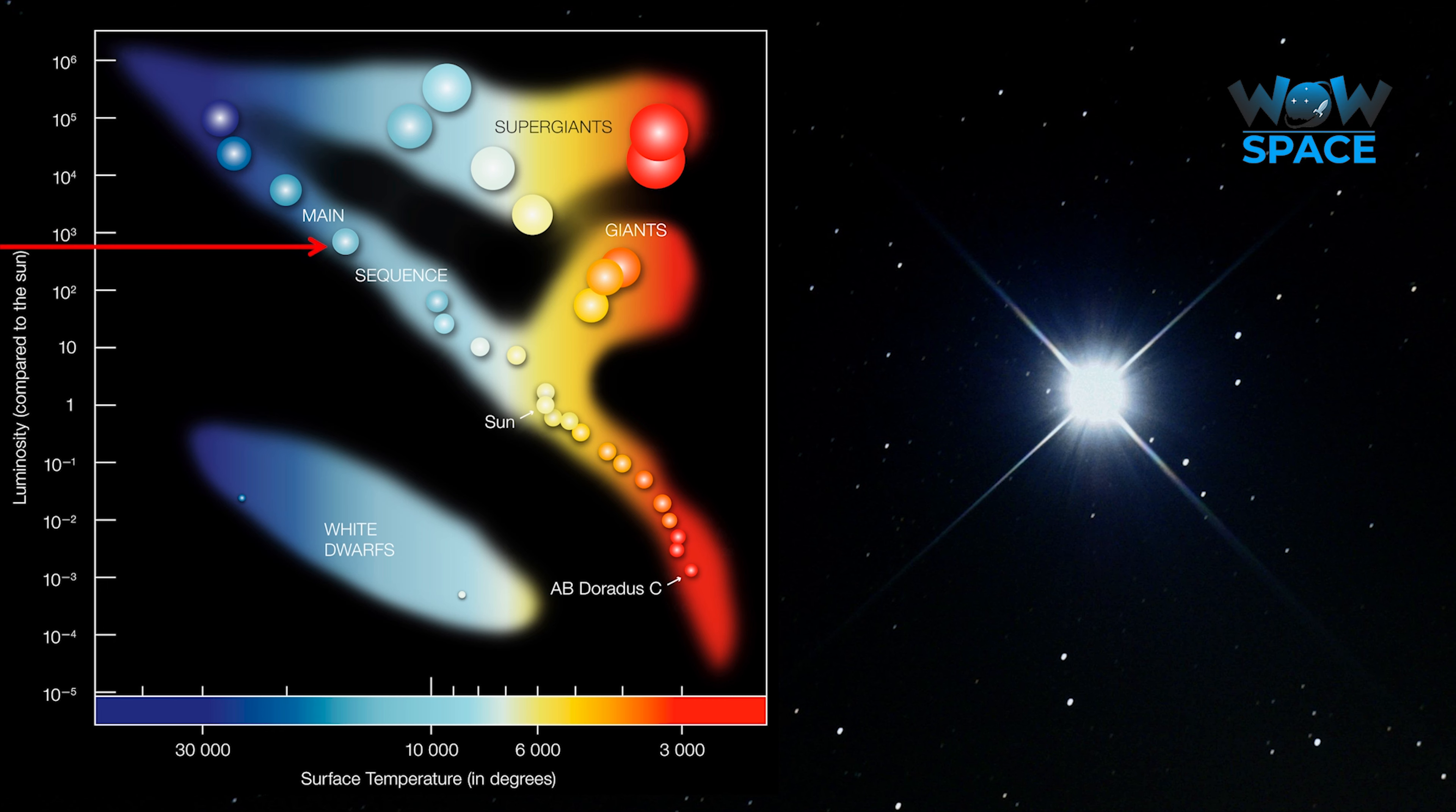A Cepheid variable is a very special type of star that changes in brightness periodically, depending on how bright it is. And some of these stars are very bright indeed, so much so that the changes in brightness can be detected by us all the way in a different galaxy.